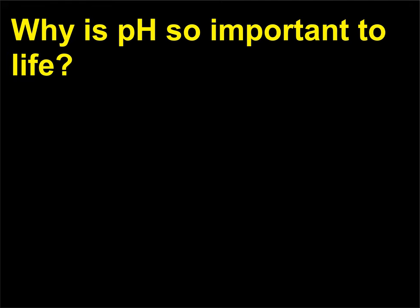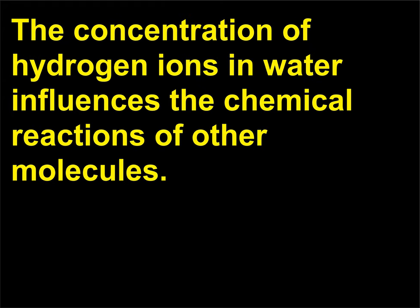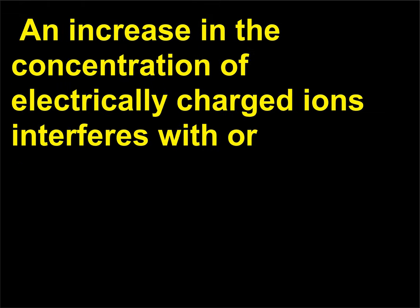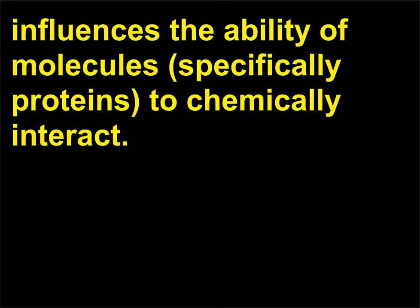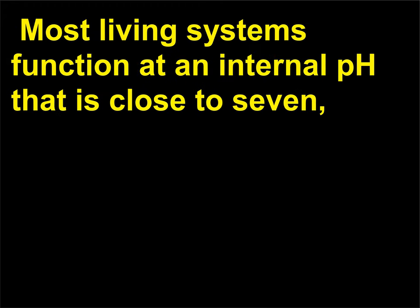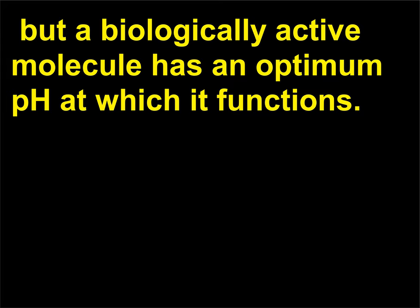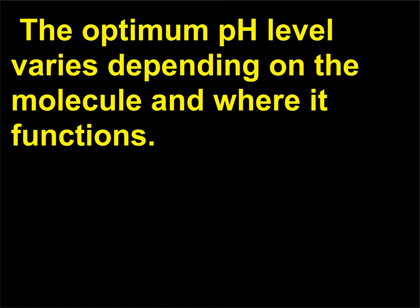Why is pH so important to life? The concentration of hydrogen ions in water influences the chemical reactions of other molecules. An increase in the concentration of electrically charged ions influences the ability of molecules, specifically proteins, to chemically interact. Most living systems function at an internal pH that is close to 7, but a biologically active molecule has an optimum pH at which it functions. The optimum pH level varies depending on the molecule and where it functions.